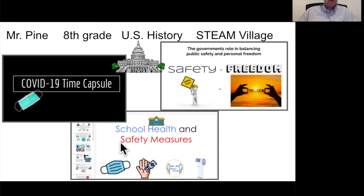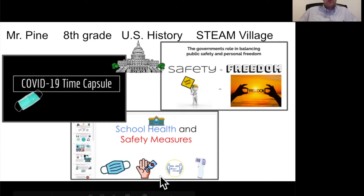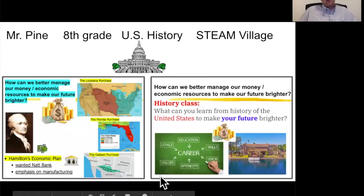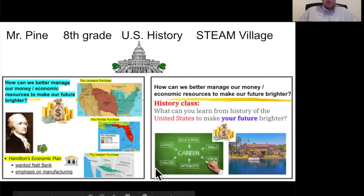For example, this year in the STEAM Village, we asked the students to examine the question of what it was like to live through a global pandemic. In my STEAM history class, we looked at how the government balances public safety and personal freedoms when reopening schools during a pandemic. Students also examined how the United States has managed its money, history, and economic resources so that students can learn from the history of the United States to make their own futures brighter.